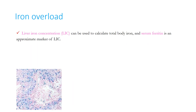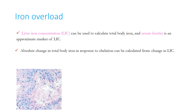Liver iron concentration (LIC) is used to calculate total body iron, and serum ferritin is an approximate marker of LIC. An absolute change in total body iron in response to chelation can be calculated from change in LIC; if following serum ferritin, we must look at trends rather than single values, because serum ferritin is an acute phase reactant and may be falsely elevated during infection and inflammation.